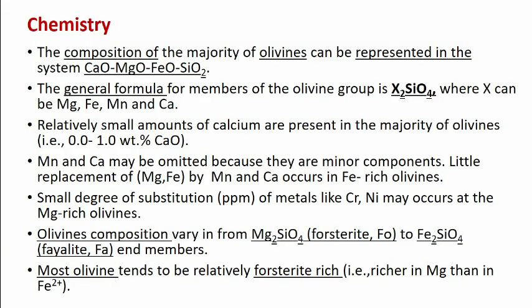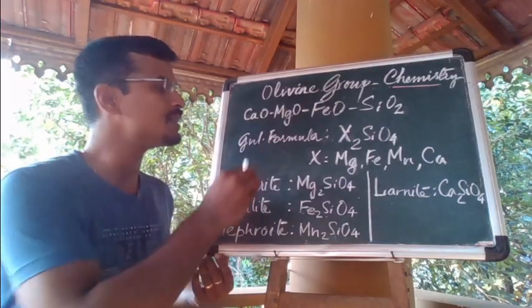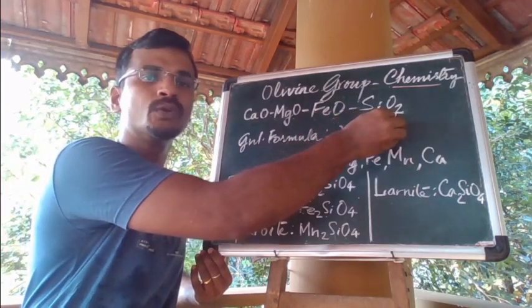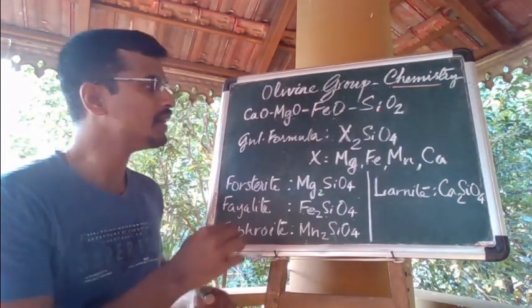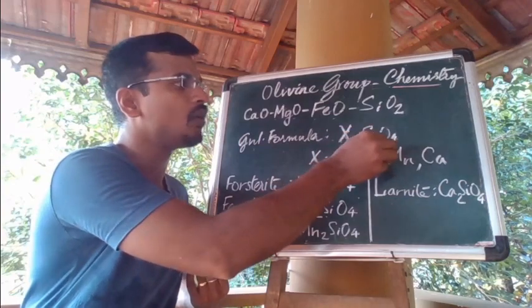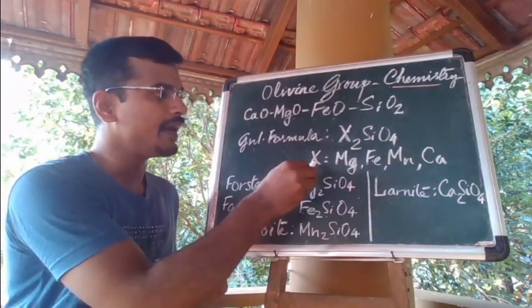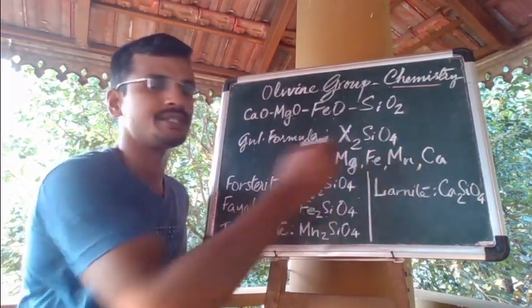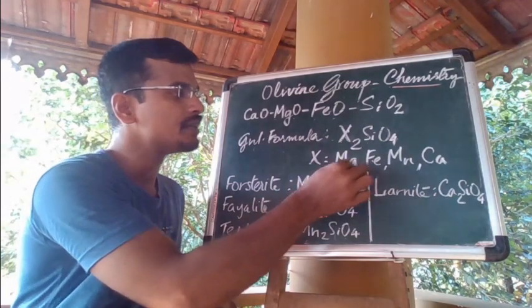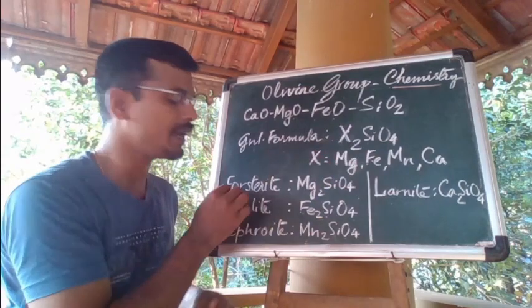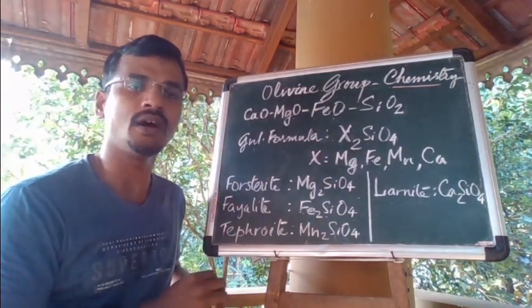The composition of the majority of olivines can be represented in a system having end-members of calcium oxide, magnesium oxide, and iron oxide linked with SiO₂, where the general formula of olivine may be written as X₂SiO₄, where X stands for magnesium, iron, manganese, and calcium. When you have these divalent cations in their octahedral position, different minerals are formed in the olivine group.